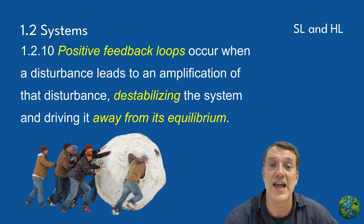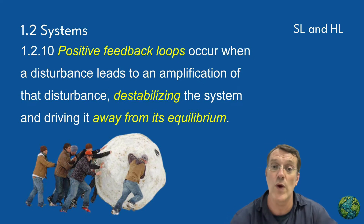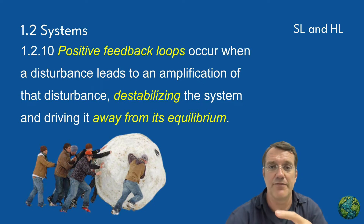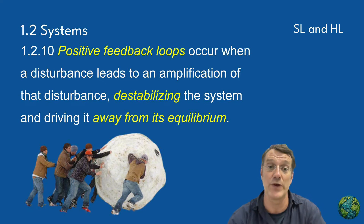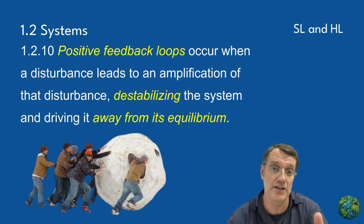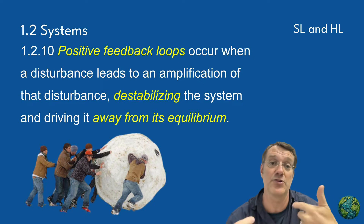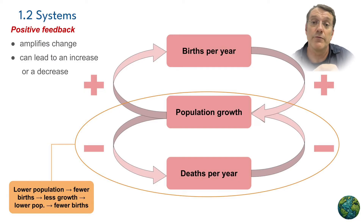Positive feedback loops amplify change in the system, potentially destabilizing it and pushing it away from equilibrium. You can think of it as the snowball effect. Unlike negative feedback, which counteracts change, positive feedback reinforces it. One small change creates a slightly larger change, which creates a slightly bigger change, and it keeps going until it's farther and farther away from the original equilibrium.